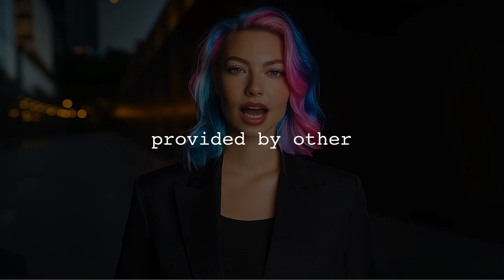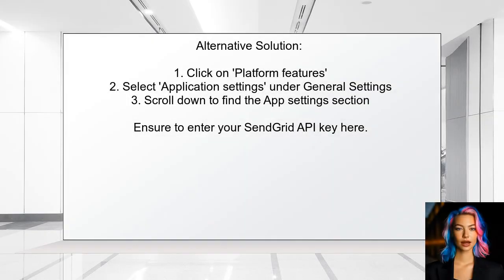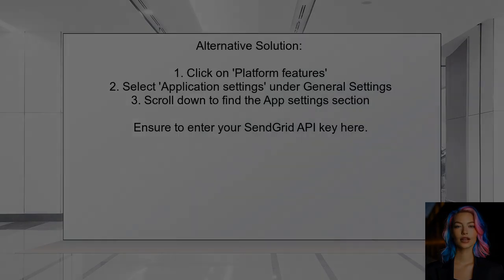Now let's look at an alternative solution from another user. Navigate to the Platform Features tab at the top of the Azure portal. From there, click on Application Settings under General Settings. By scrolling down, you'll find the App Settings section where you can enter your SendGrid API key.